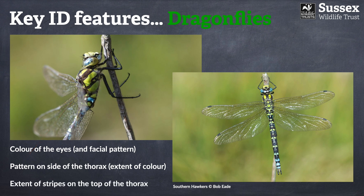As well as looking at the side of the thorax, you also want to look at the top, because the stripes on top of the thorax are really, really important — in fact, this is one of the best features for trying to work out what species you're looking at. In the case of this Southern Hawker, you can see it has two big green blotches on top, which are very distinctive. Some species may display almost no stripes whatsoever.